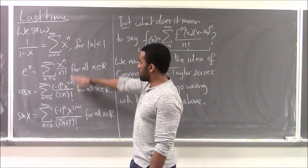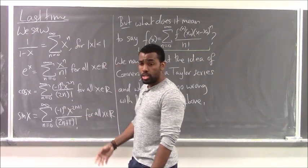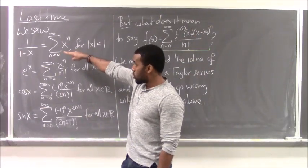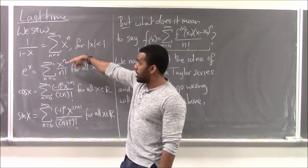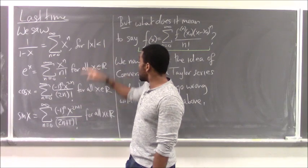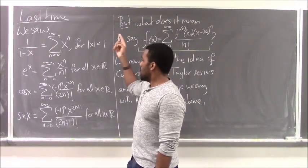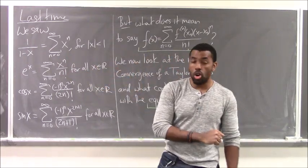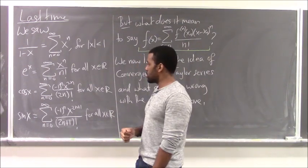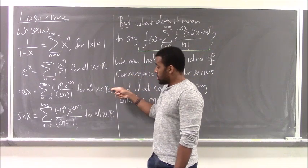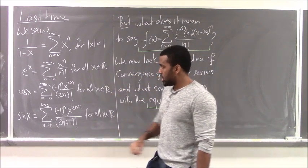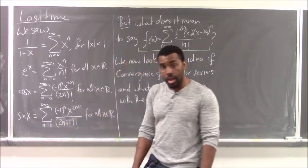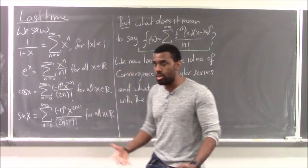Last time we saw these facts — there are some power series you need to have memorized. The function 1 over (1 minus x) equals the series of x^n from n=0 to infinity, which works only if |x| < 1. e^x equals the series of x^n over n! from n=0 to infinity, which works for all real x with radius of convergence infinity. Cosine x and sine x also have their series, which work for all real x — these you should know off the top of your head.